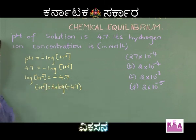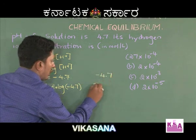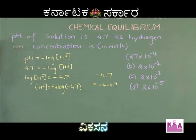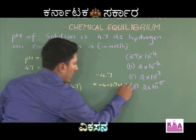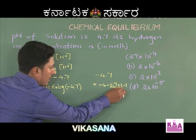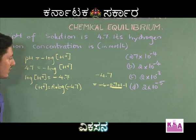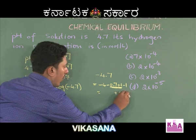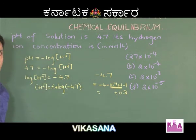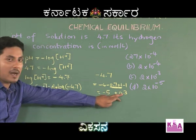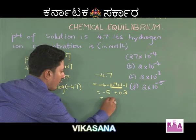The mantissa can be converted into positive by adding and subtracting one. For example, -4.7 can be written as -4 - 0.7. I will add and subtract 1. Since I need the mantissa part to be positive, I add 1 to -0.7: -0.7 + 1 = +0.3. Then -4 - 1 = -5. So now we have -5 with a positive part 0.3.